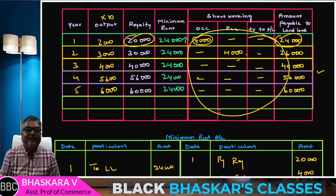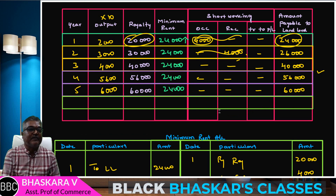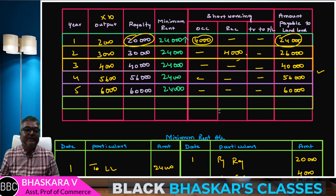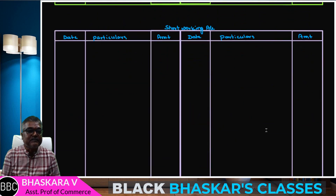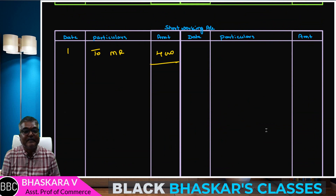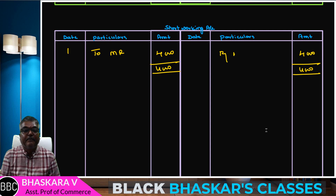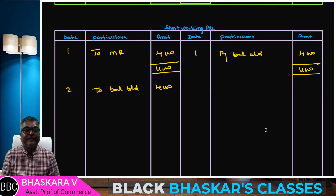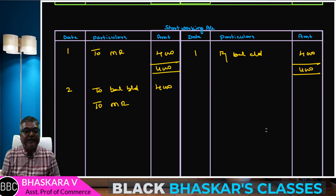This three-column format covers the first year and the second year. First year: minimum rate account 4; balance carried down. Second year: balance brought down 4.